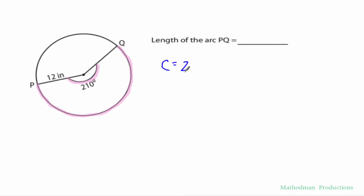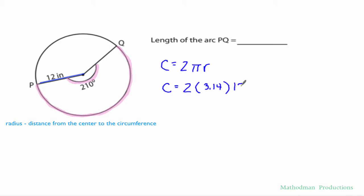Circumference equals 2πr. I have 2 times pi. I'll just use 3.14 times my radius. My radius in this problem is 12. And if I do that, I get my circumference to come out to be 75.36. How can that help me find an arc length?